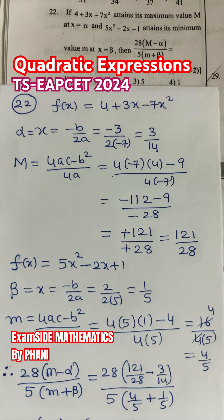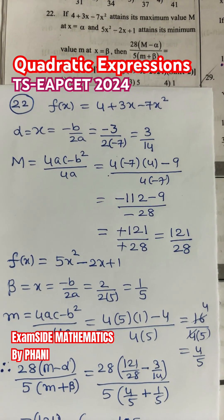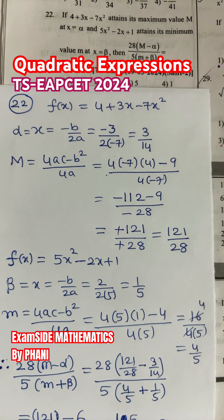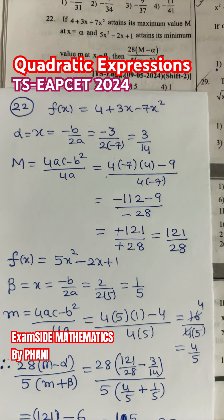That is capital M = (4ac - b²)/4a. So substitute and we have got it as 121/28, that is the value of capital M.